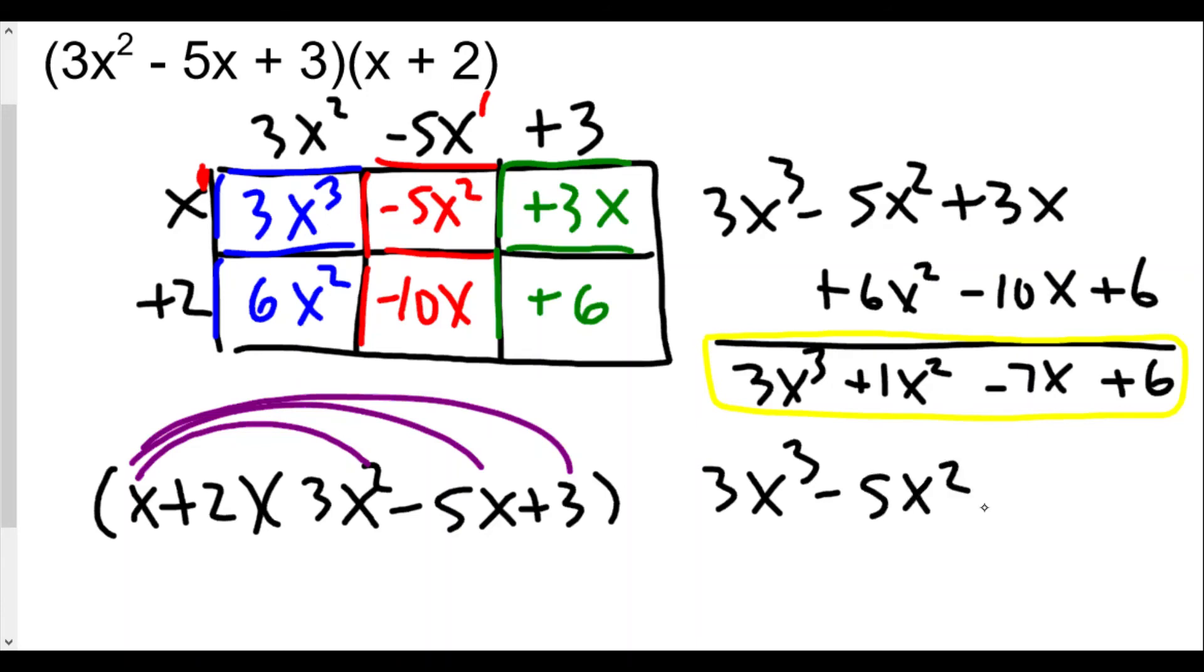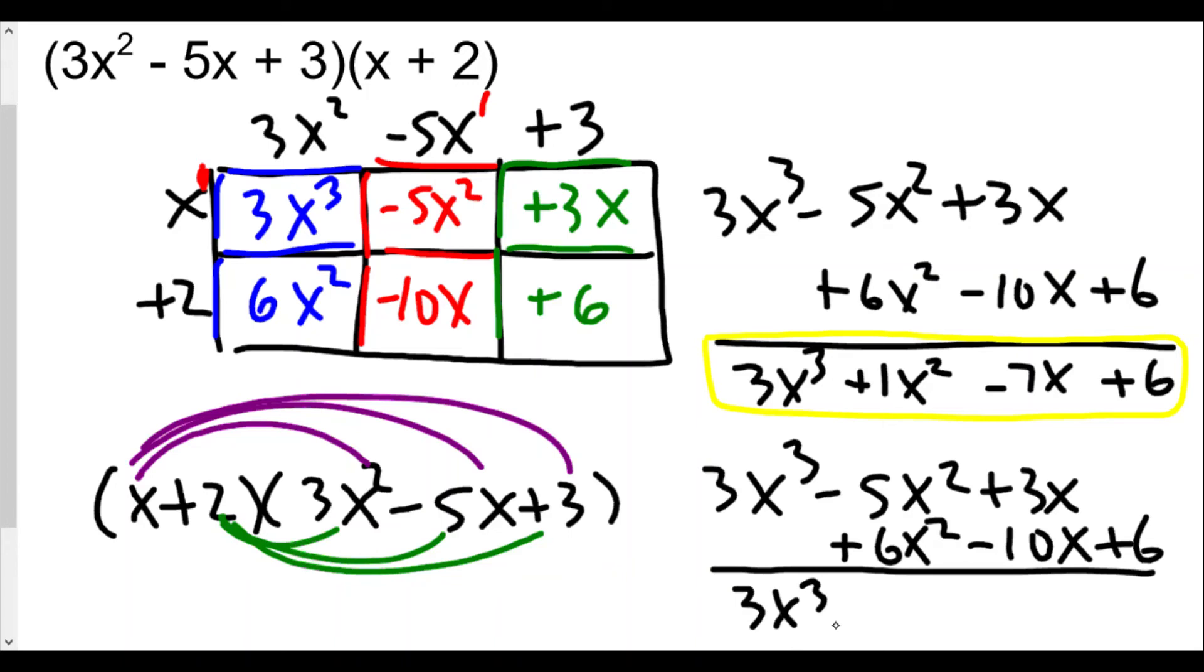Now I'm going to do 2 times 3x², 2 times -5x, and then 2 times 3. So 2 times 3x² is going to be +6x², 2 times -5x is going to be -10x, and 2 times 3 is 6. You'll notice it's really the same exact thing as the box method, so either method is fine. Which one's better? The one you are most likely to get correct, meaning the one you're most comfortable with. But to be comfortable with this, you have to practice. Notice we still get the same thing: 3x³ + 1x² - 7x + 6.